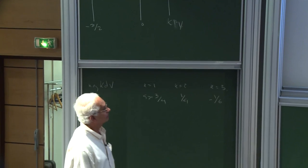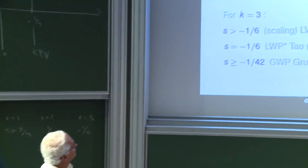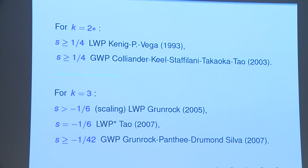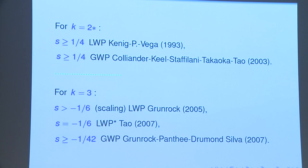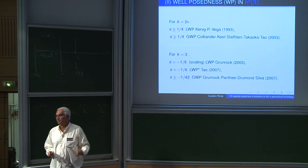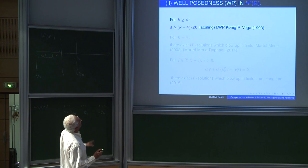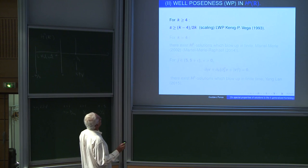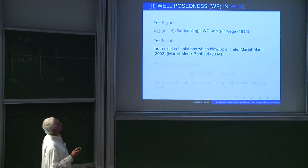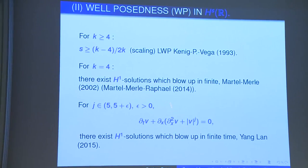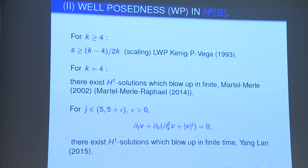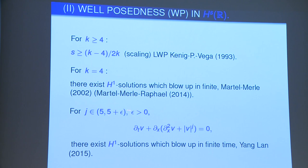For power k=3, you can prove local well-posedness down to s = -1/6, and there is a gap between local and global. If you reach the homogeneity scaling for any power, the extra information is that for small data you have a global solution — and here you can take complex values because there is no conservation law needed. If k is larger than 2 you reach the homogeneity, a result proved long ago with Carlos and Luis. For k=4, there is a blow-up result of Martel and Merle from 2002. More recently they gave a more detailed description of the blow-up, and two weeks ago it was shown that for non-integer powers beyond 4, blow-up still holds — a result of Yang-Lang.